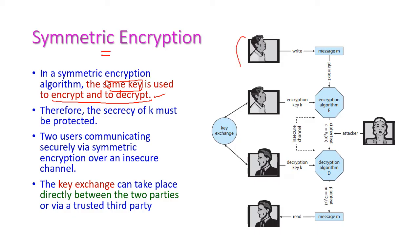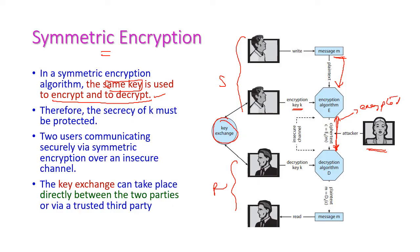On the sender side, the same key is exchanged between the sender and receiver. The sender has a plain text, which is encrypted using the encryption algorithm with this key, producing ciphertext that is transmitted over the internet. An attacker may try to intercept this channel, but since the information is encrypted, the encrypted message is of no use to the attacker. On the receiver side, the receiver uses the same key to decrypt the ciphertext and the plain text is recovered.